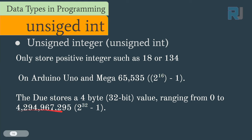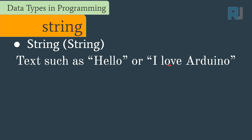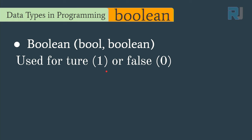When we work with text like 'hello' or 'I love Arduino', we store it in a variable of data type String. We also have boolean — when we work with true or false we use boolean. The value of true is 1 and false is 0. This is very simple.